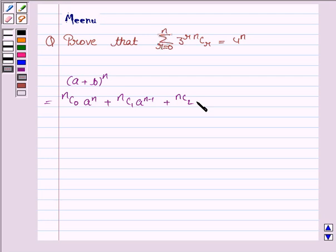nc2 a to the power n minus 2 b to the power 2 and so on. The last term is ncn b to the power n. So this is the key idea.